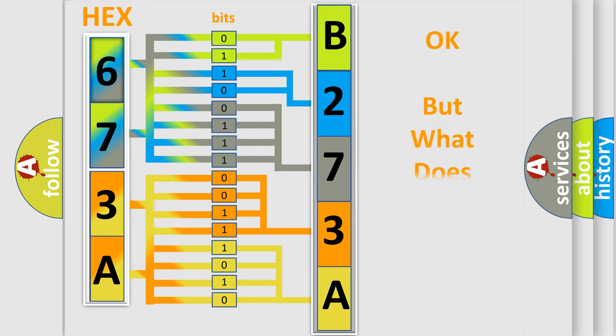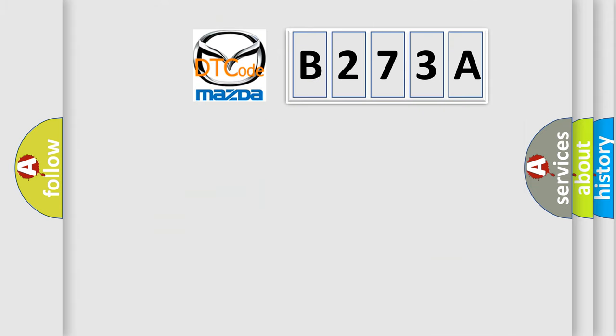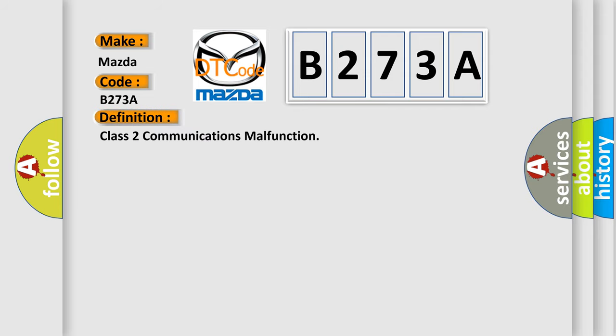The number itself does not make sense to us if we cannot assign information about what it actually expresses. So, what does the diagnostic trouble code B273A interpret specifically for Mazda car manufacturers? The basic definition is: Class 2 communications malfunction.